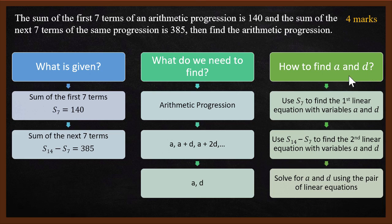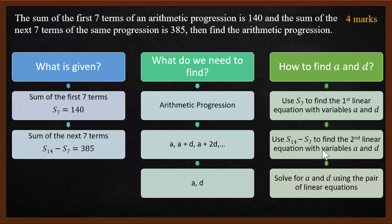This is where pair of linear equations comes in. We use S7, the sum of the first 7 terms, to find the first linear equation with variables a and d. The second part uses the next 7 terms to find the second linear equation with a and d. Once you have two linear equations and two variables, you can solve for a and d using pair of linear equations.